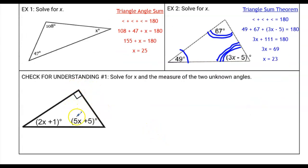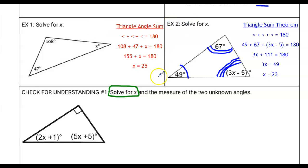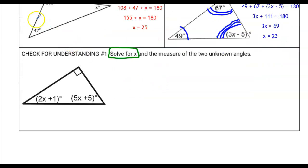Take a look at the check for understanding. This one requires you to know a little bit about what the diagram is telling you. Keep in mind it only shows two different expressions for the angles, but there's a third angle you can figure out by examining the diagram closely. It asks us to solve for x and the measure of the two unknown angles — so it's a bit more involved than just solving for x. Go ahead and try it.